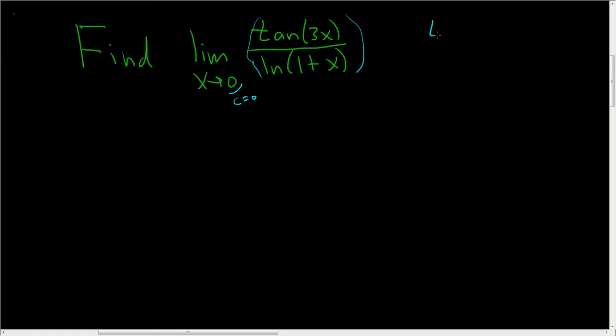So if we plug in 0 for x, we get the tangent of 0 over the natural log of 1. The tangent of 0 is 0 and the natural log of 1 is also 0. So this is what's called an indeterminate form.